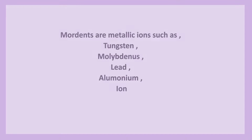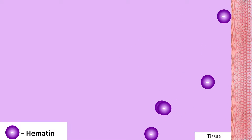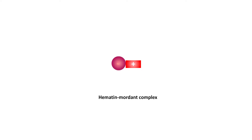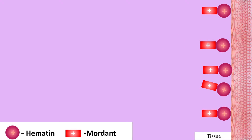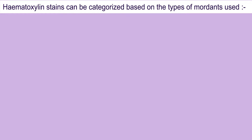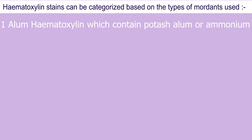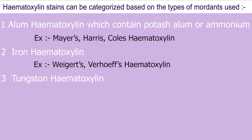Mordants are metallic salts such as tungsten, molybdenum, lead, and ammonium alum. Hematein is a weak anionic basic dye, therefore it has weak affinity to acidic cellular structures. Combined with the mordant, the dye-component complex gets a positive charge and increases affinity to selected tissue elements. The cationic dye-metal complex binds to the anionic nuclear chromatin. Hematoxylin stains can be categorized based on the type of mordant used, such as alum hematoxylin, iron hematoxylin, tungsten hematoxylin, molybdenum hematoxylin, and lead hematoxylin.